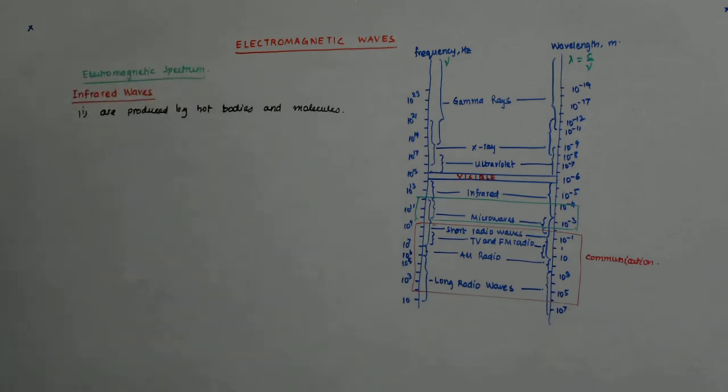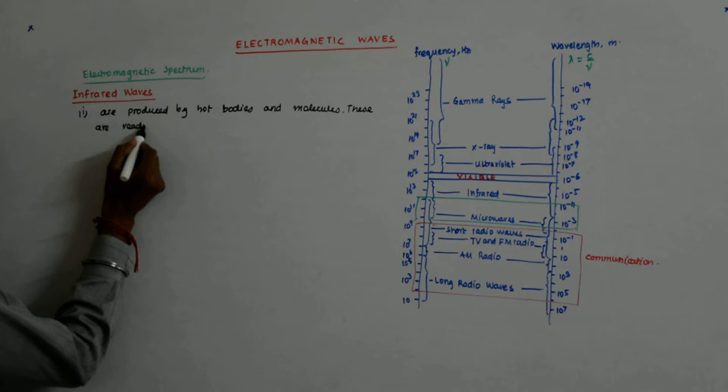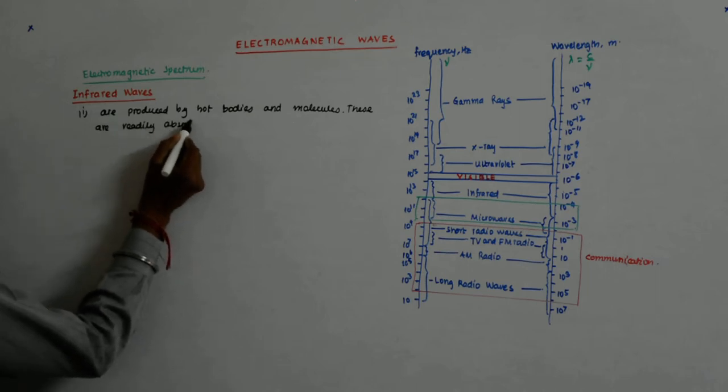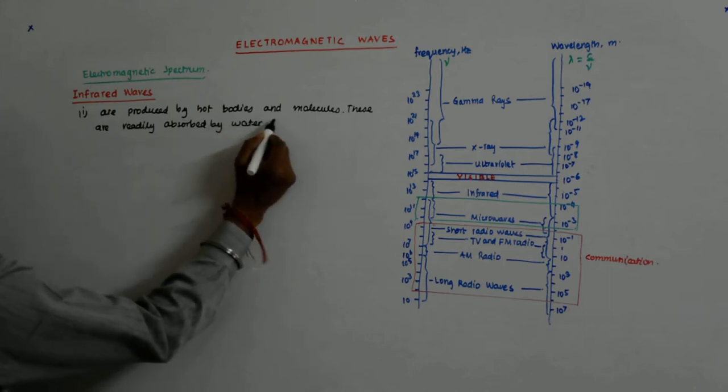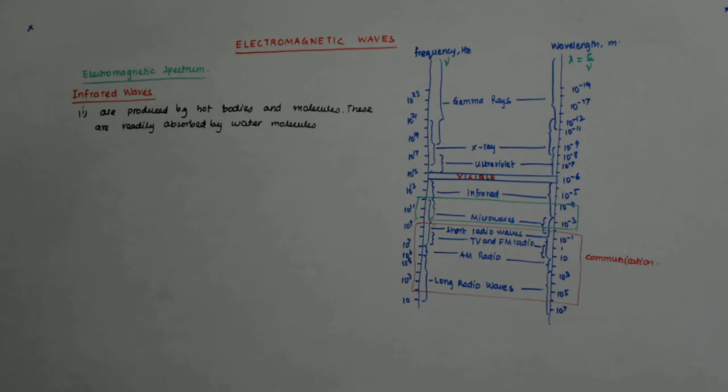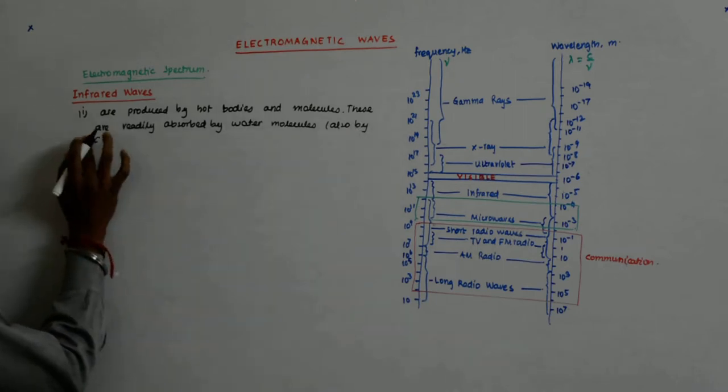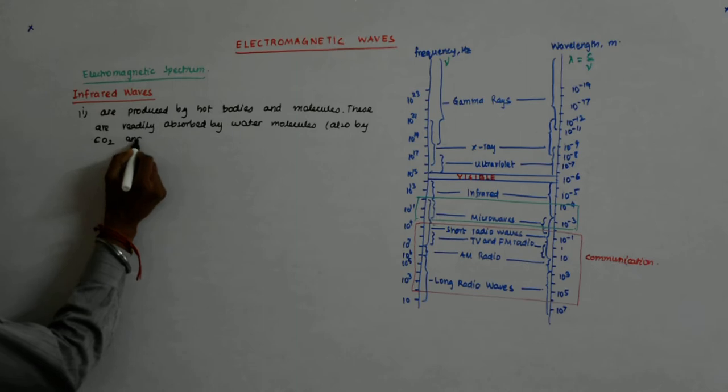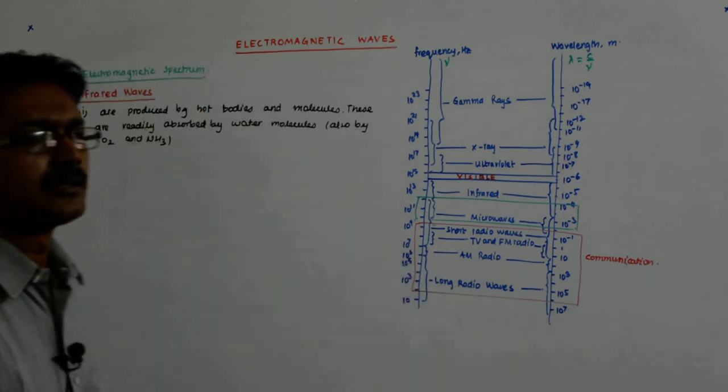These infrared waves are readily absorbed by water molecules. Apart from water, they are also readily absorbed by CO2 and ammonia.